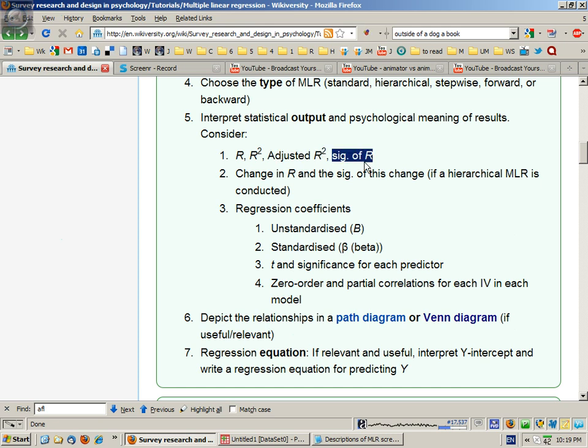You'll also get the level of significance of the R. In other words, could this amount of variance explained have occurred by chance, or are we going to reject the idea it could have occurred by chance and say there probably are relationships, linear relationships, between the variables? The output will also give you the change in R if you did a hierarchical multiple linear regression and the significance of that change.